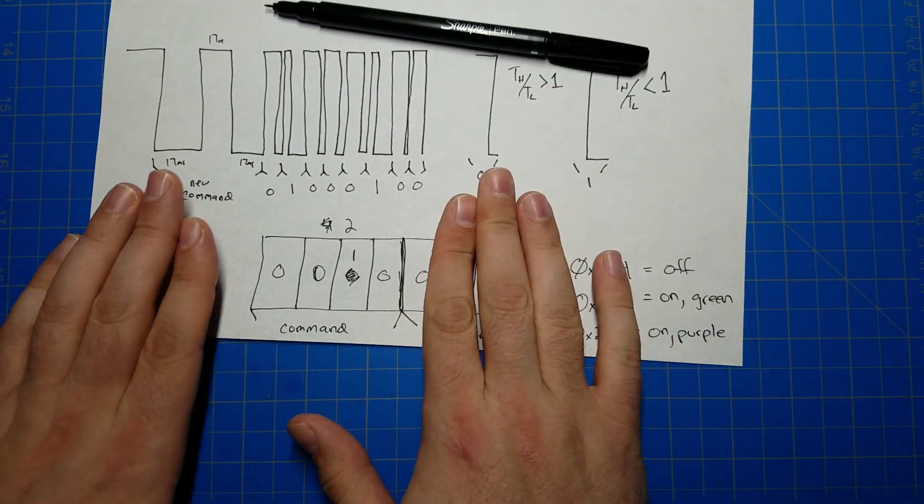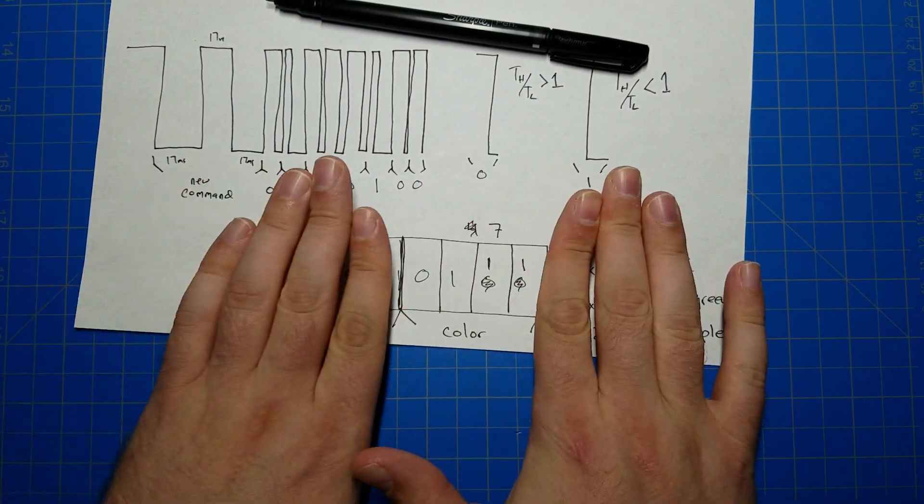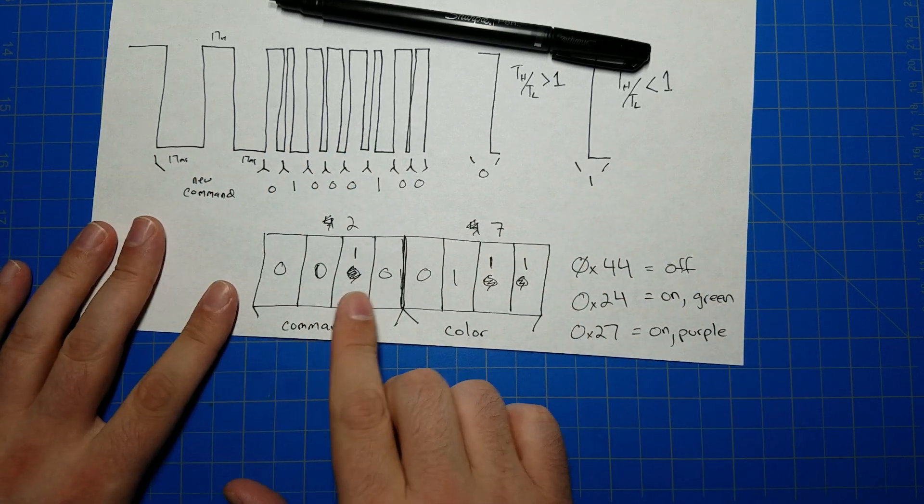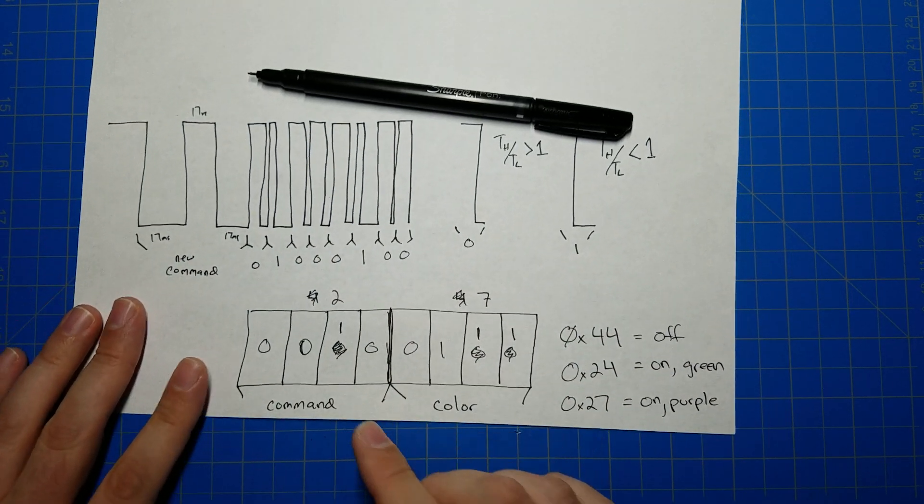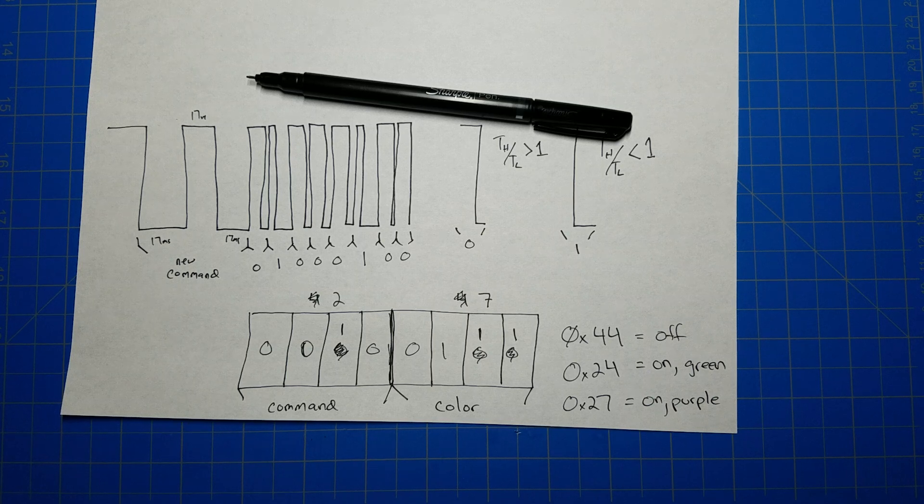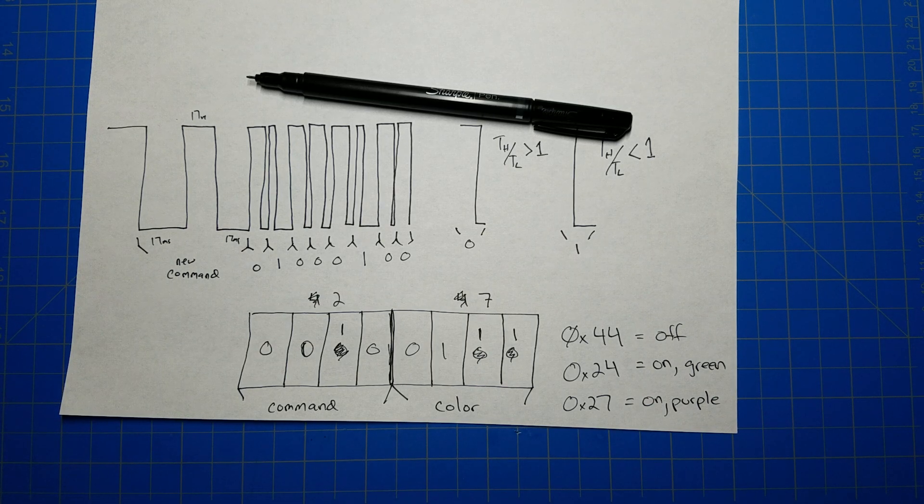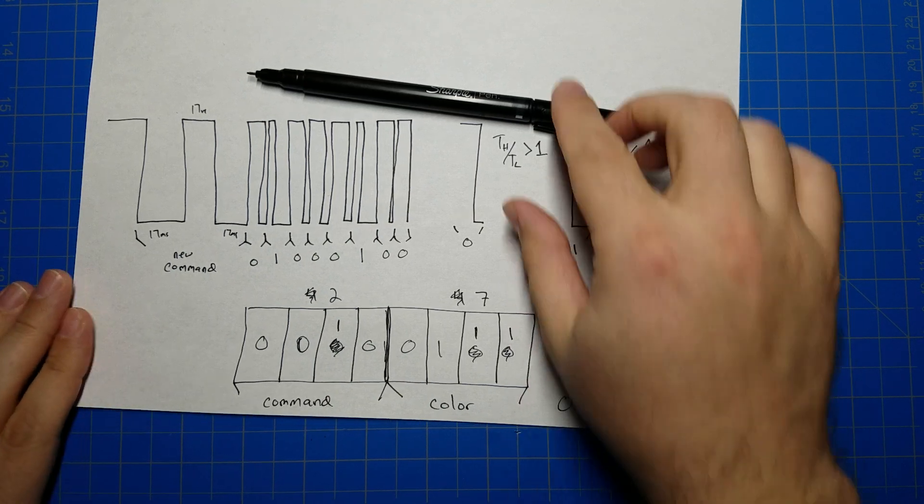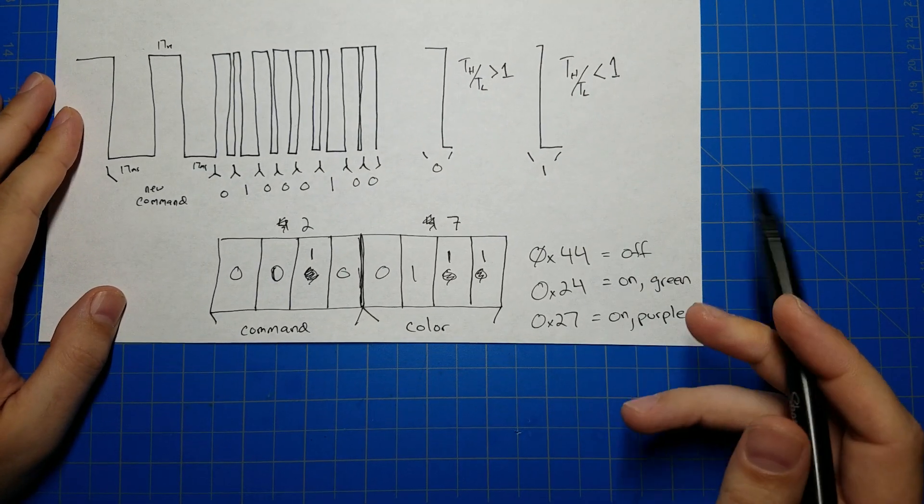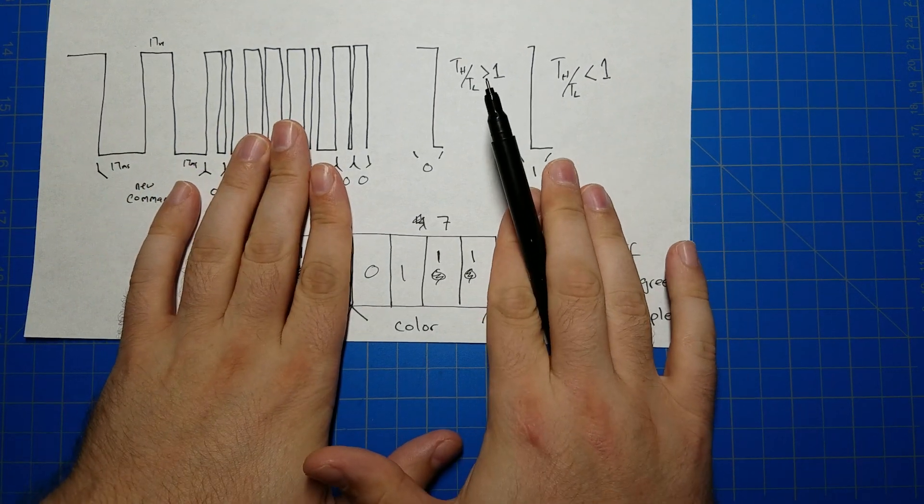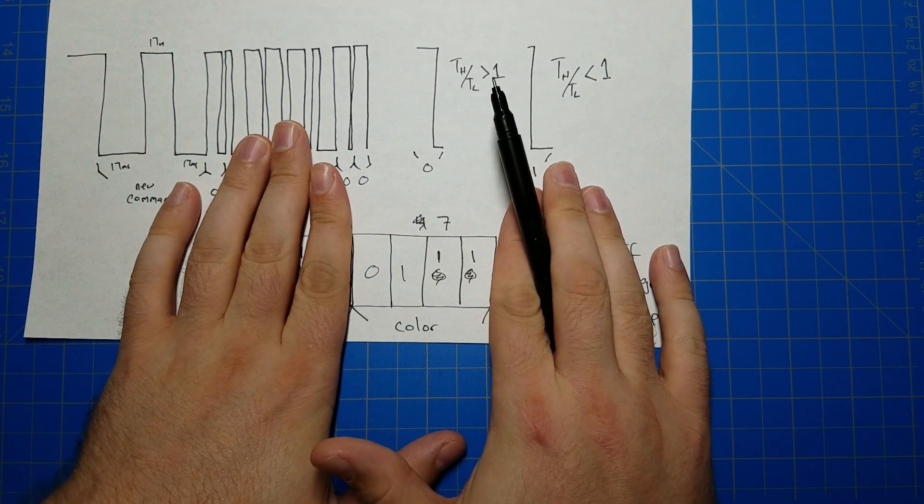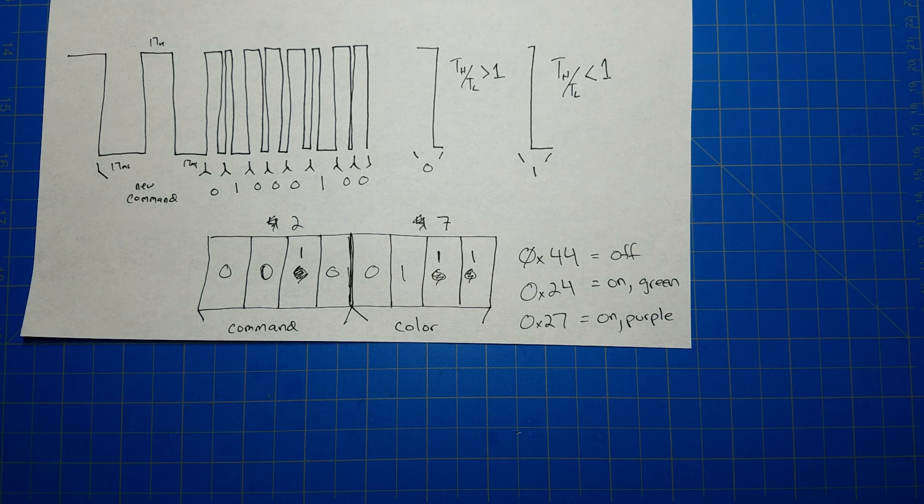The eight bits, you can break it down into four bits per half, right? The first four bits is the command. The command is turn on, turn off, flash. And that's about it really. There are other commands but nothing important. Those are the big ones. And then the second four bits are the color. So turn on as a red or turn on blue, turn on green, turn on yellow, whatever.